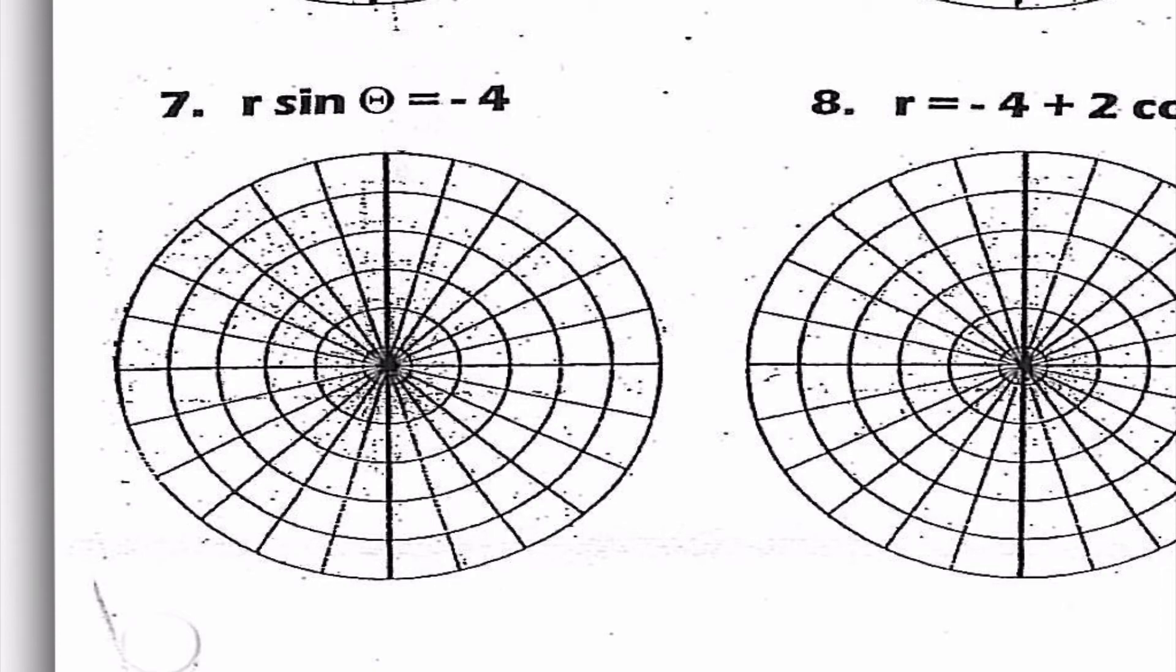Okay, number seven, r sine theta equals negative four. I know r sine is equal to y. So this is saying y equals negative four, which we know is a line. So I'm going to go down one, two, three, four, and draw a horizontal line.